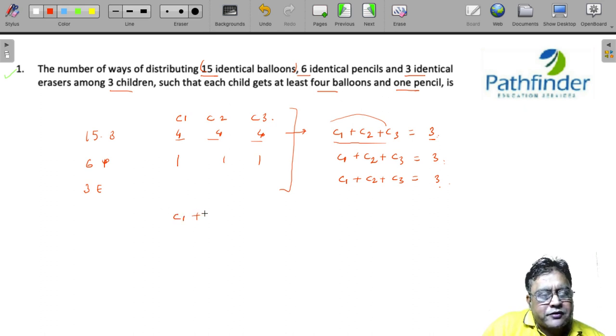So you have C1 plus C2 plus C3, and you have to distribute 3 identical pencils so that any student can get any number, because the minimum number is already covered.